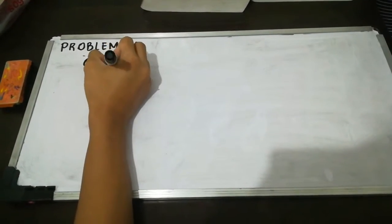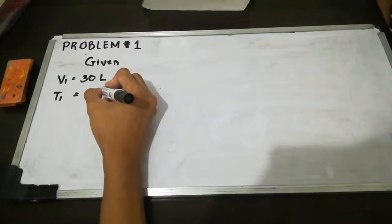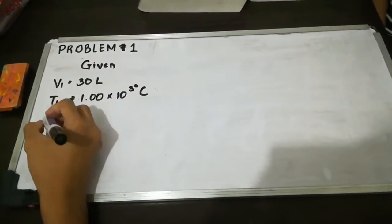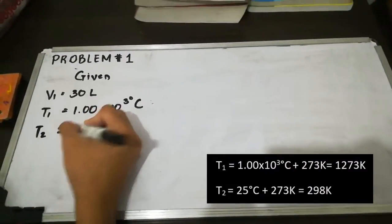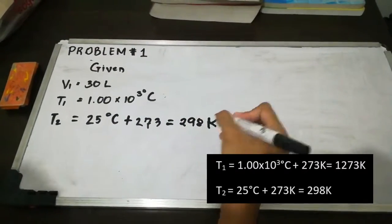First, we convert the temperature to degrees Kelvin by adding 273. So, the initial temperature is 1,273 Kelvin and the final temperature is 298 Kelvin.